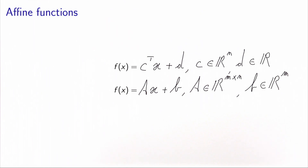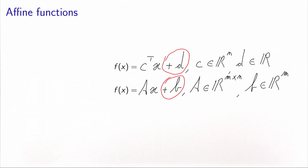As we have seen when discussing transformations of an optimization problem, adding a constant to an objective function does not matter. So this additional shift term — whether a scalar or a vector B — plays no role in the objective function. For this reason, in optimization we use the name 'linear' even when talking about affine functions. It is an abuse of language, since these shifts do not affect the optimization problem.